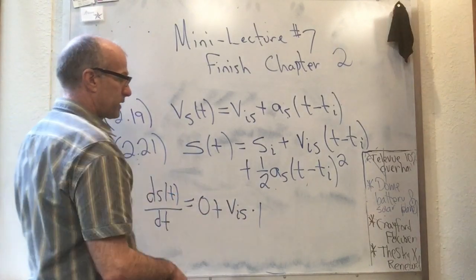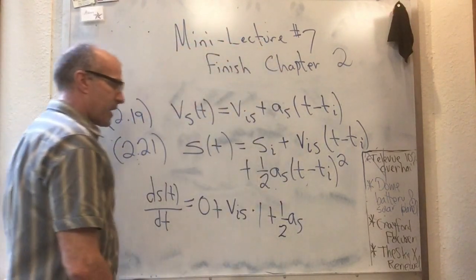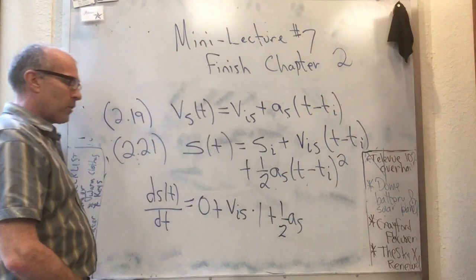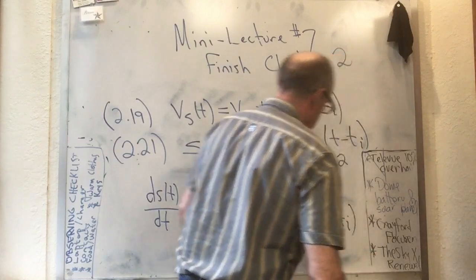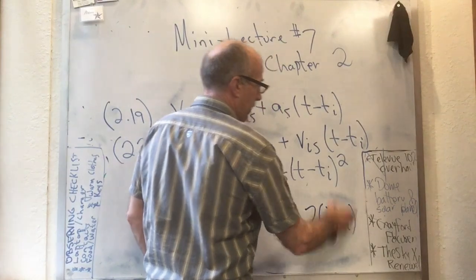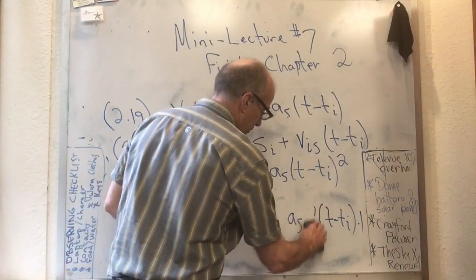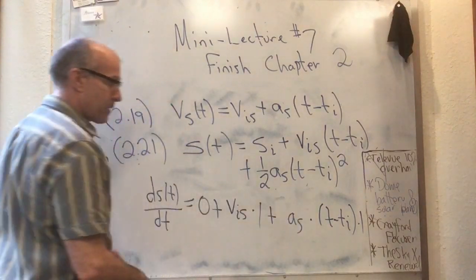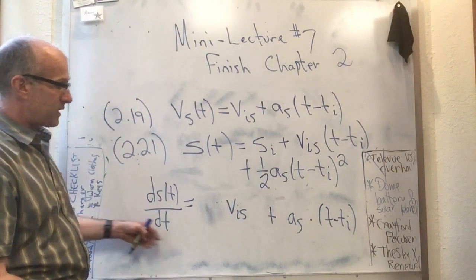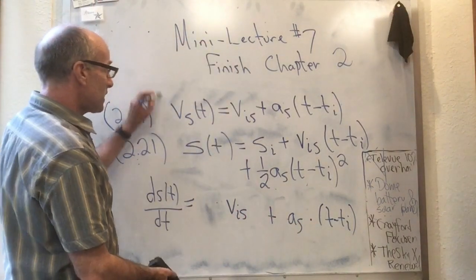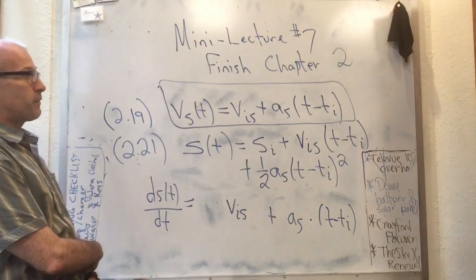So ds(t)/dt is simplifying to v_is. Now we take the derivative of the last term: we have multipliers one-half and a_s out front, and the derivative of something squared is two times that thing times the derivative of the inner function. The derivative of (t minus t_i) is one, so the one-half and the two cancel. Adding zero and multiplying by one are redundant, and we get ds(t)/dt = v_is + a_s(t minus t_i), which is exactly what we needed.